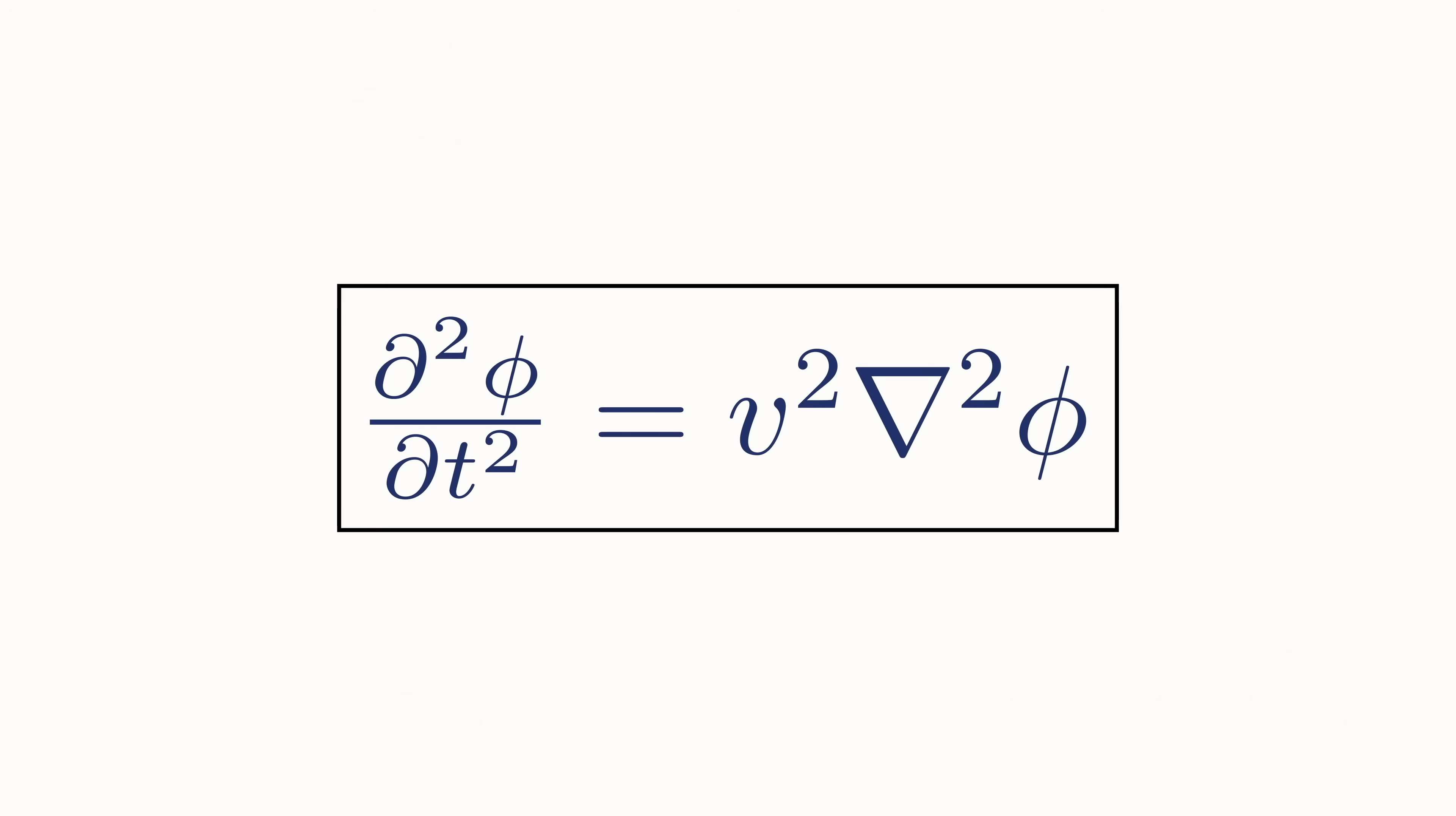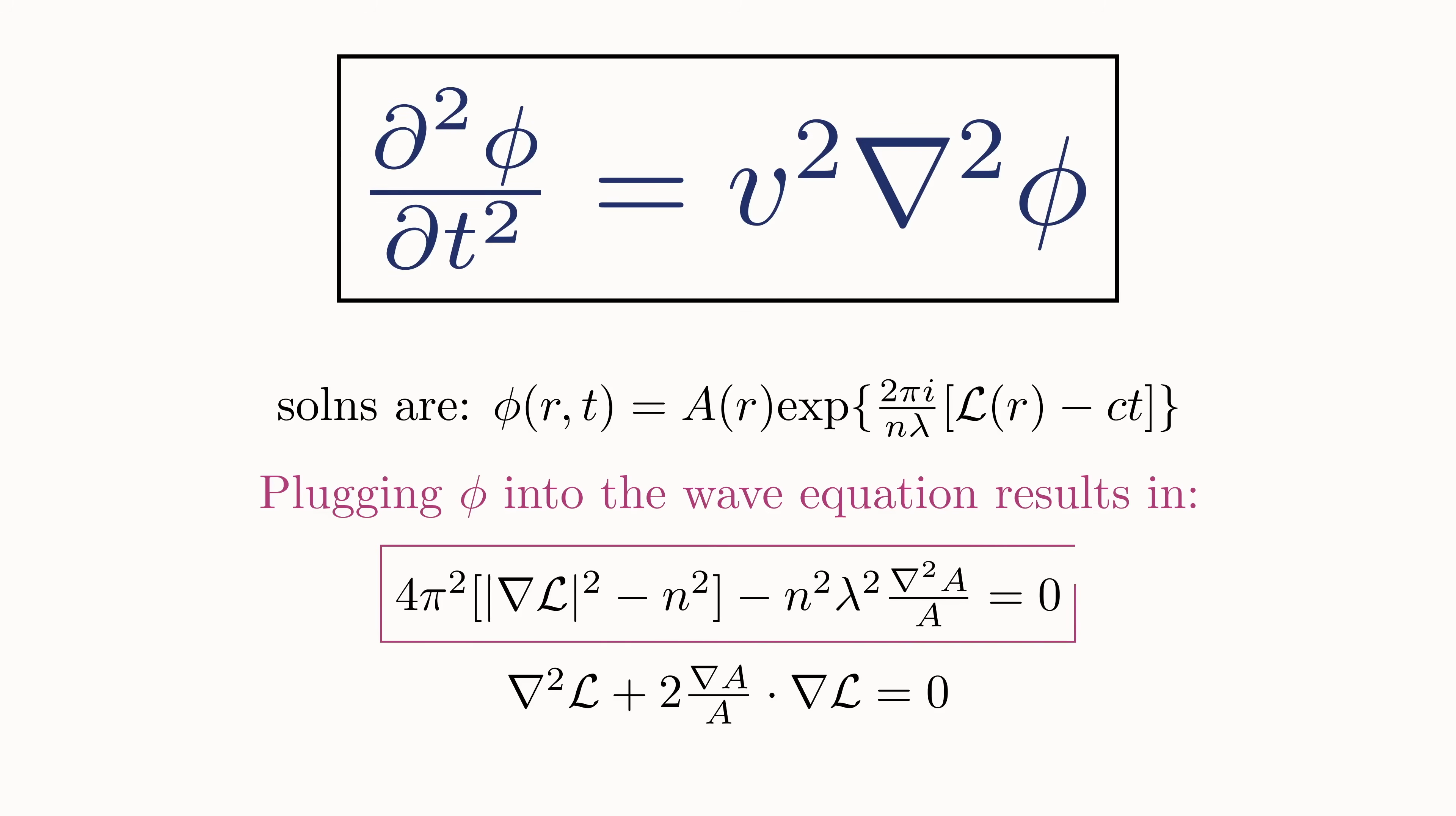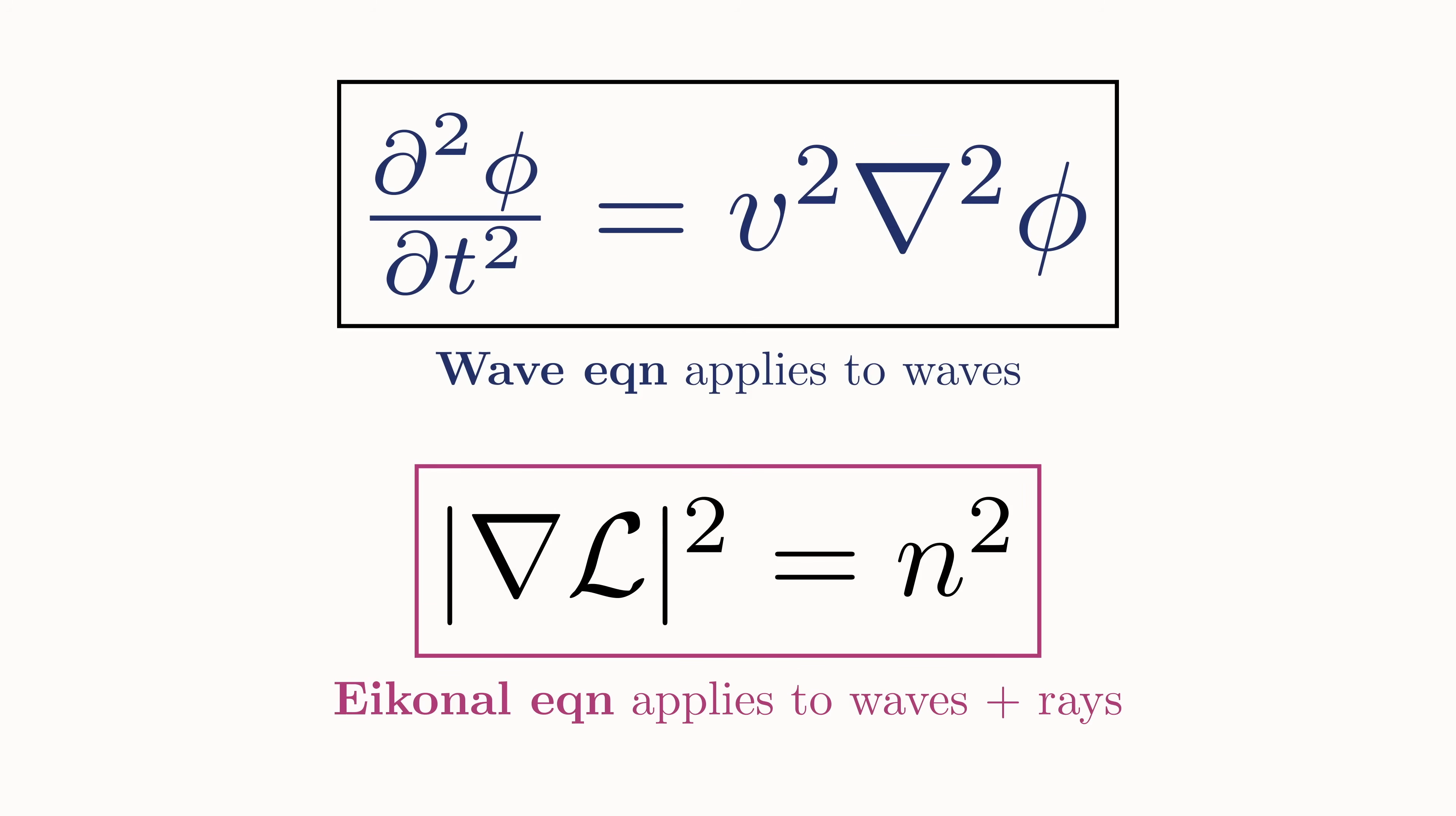And the solutions to this equation have the following form. Where A is a function describing the amplitude of the wave, N is the index of refraction, lambda is the wavelength, and L is a function called the iconal. After plugging this solution into the above wave equation, we get two different equations corresponding to the real and imaginary part. Focusing on the real part, we can see that if we take the limit as the wavelength approaches zero, we get the iconal equation. One of the fundamental equations of geometric optics we saw earlier. Remember, it is this equation that gives the wave fronts and consequently allows us to also find the light rays orthogonal to them.